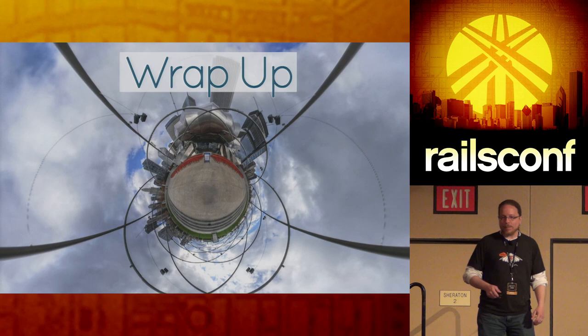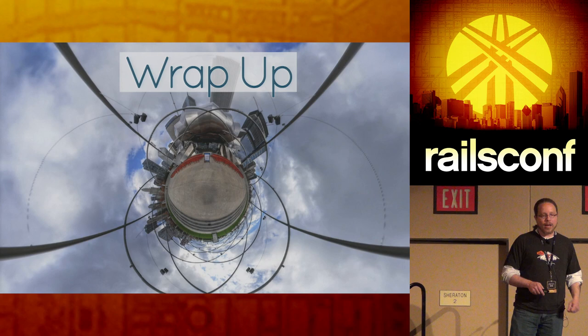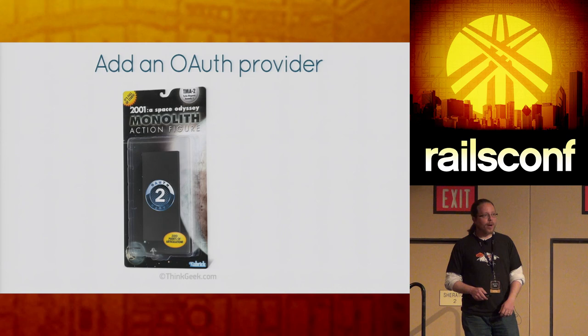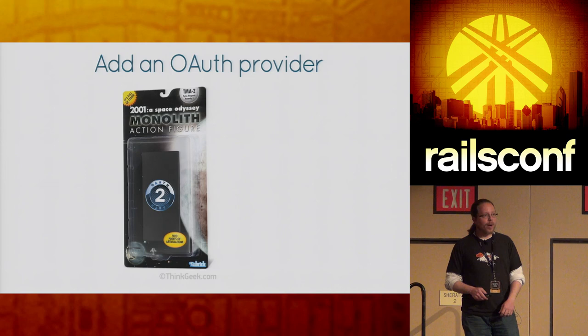To wrap up: basically stand up a provider, build a convenience gem that allows you to stand up more services, and then start standing up services. The one thing I hope you'll take away is that you can start exactly where you are today, even with a monolith. You can plug provider functionality on top of your monolith and start adding services to inch your way towards SOA. Thanks for watching.